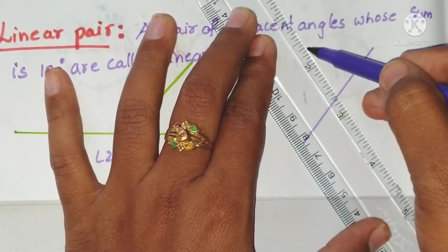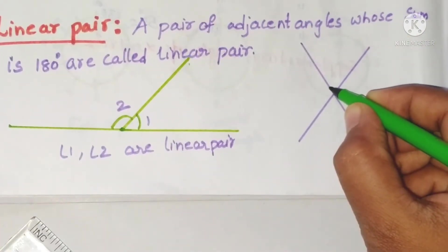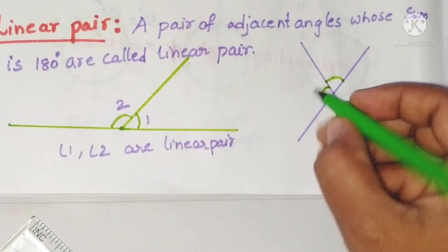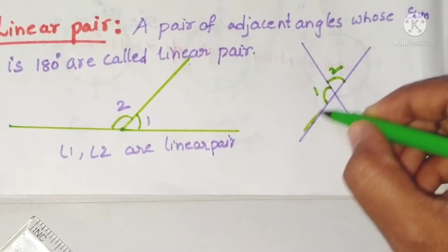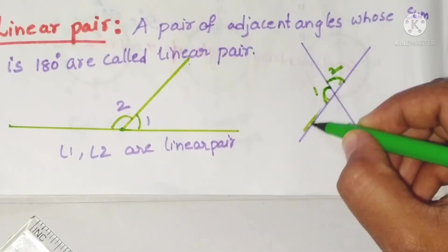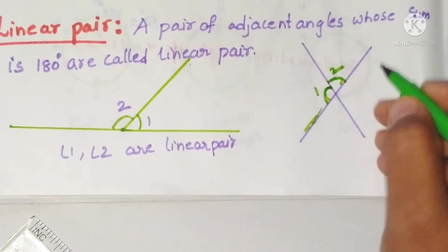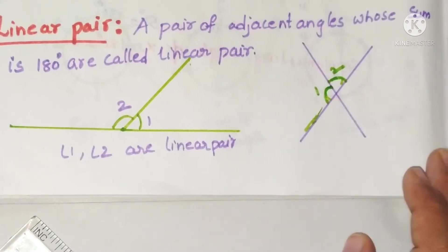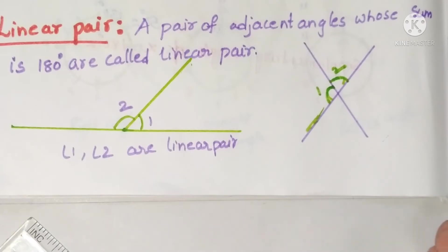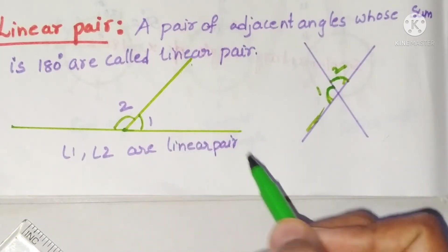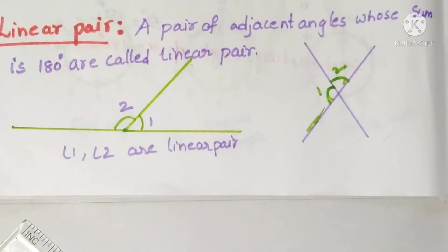In other words, a linear pair of angles is also formed when two lines intersect. See, this is one angle and this is another angle. Angle 1 and angle 2 form a straight line — straight line forming means their sum is 180 — so here angle 1 and angle 2 are a linear pair.